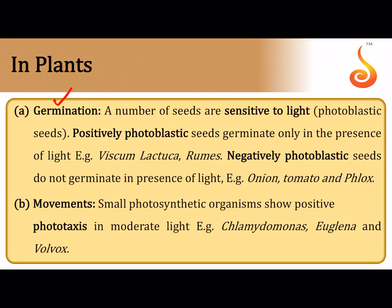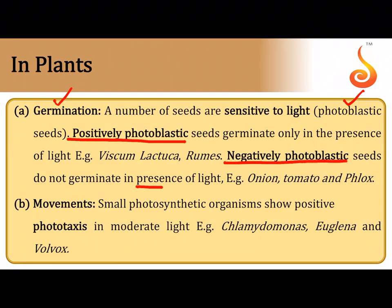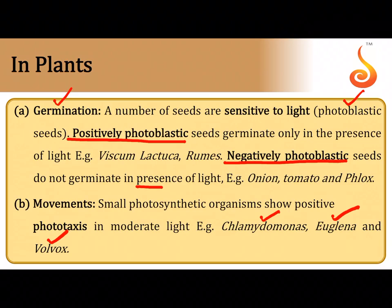Seed germination can also depend on light — seeds sensitive to light are called photoblastic seeds. A seed that germinates only in the presence of light is called a positively photoblastic seed, for example Viscum. A seed that does not germinate in the presence of light is referred to as a negatively photoblastic seed, for example onion and tomato. Unicellular organisms like Chlamydomonas, Euglena, and Volvox tend to move toward well-lit areas to capture radiant energy — this kind of movement toward light is referred to as phototaxis.